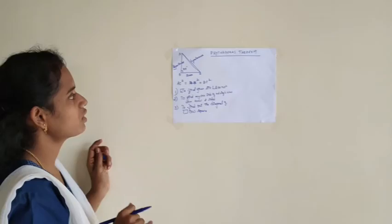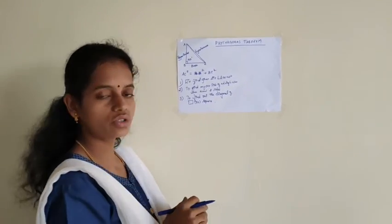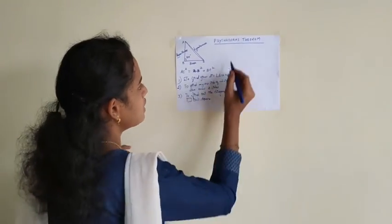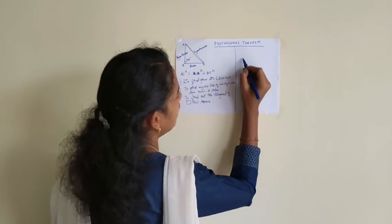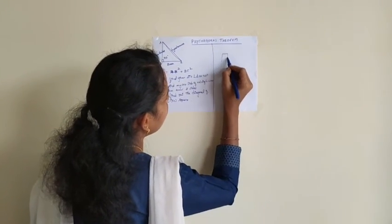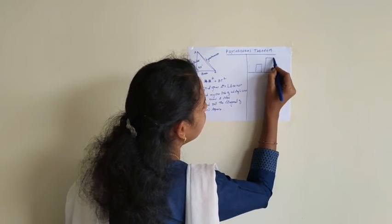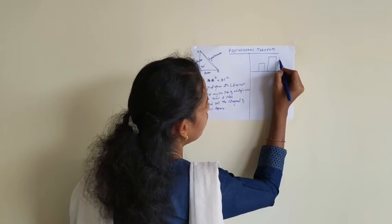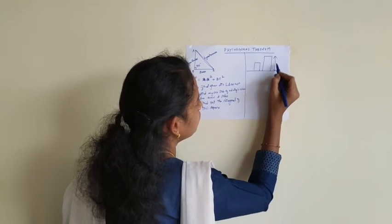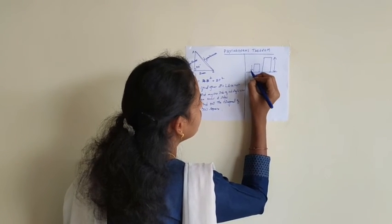So this Pythagoras theorem is used day to day. We will see with an example. There are two buildings. And we know the height of this building and the height of this building also.